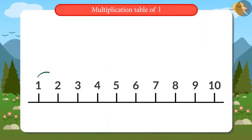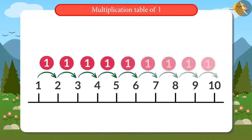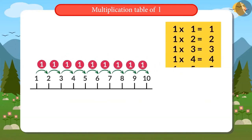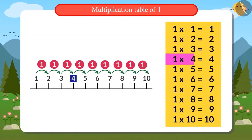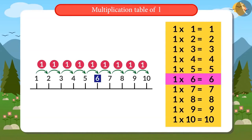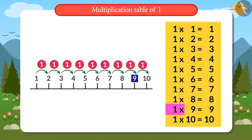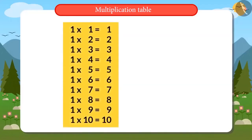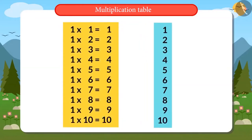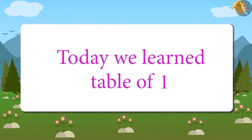If we add 1 to any number on the number line, we get its succeeding number. This is the number line, and I will read out the table of 1: 1×1 is 1, 1×2 is 2, 1×3 is 3, 1×4 is 4, 1×5 is 5, 1×6 is 6, 1×7 is 7, 1×8 is 8, 1×9 is 9, 1×10 is 10. This means that the table of 1 is counting from 1 to 10. Today we learned about the multiplication table of 1.